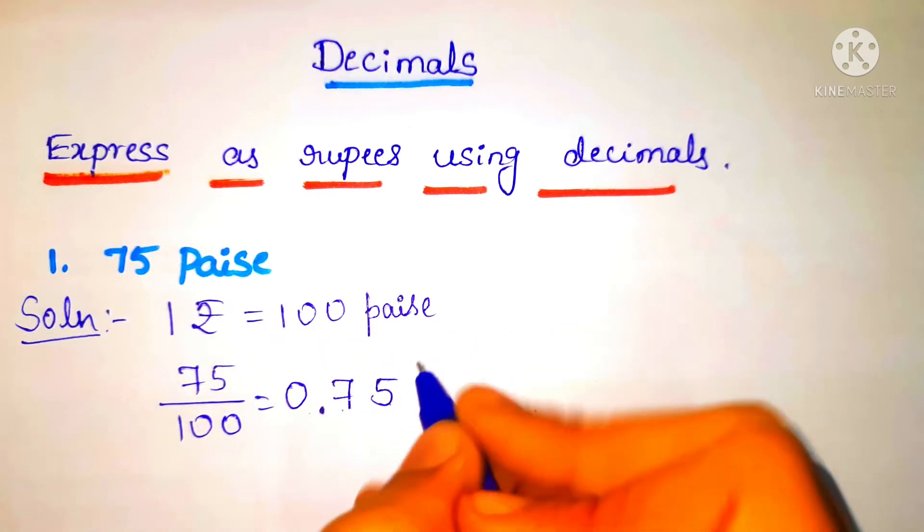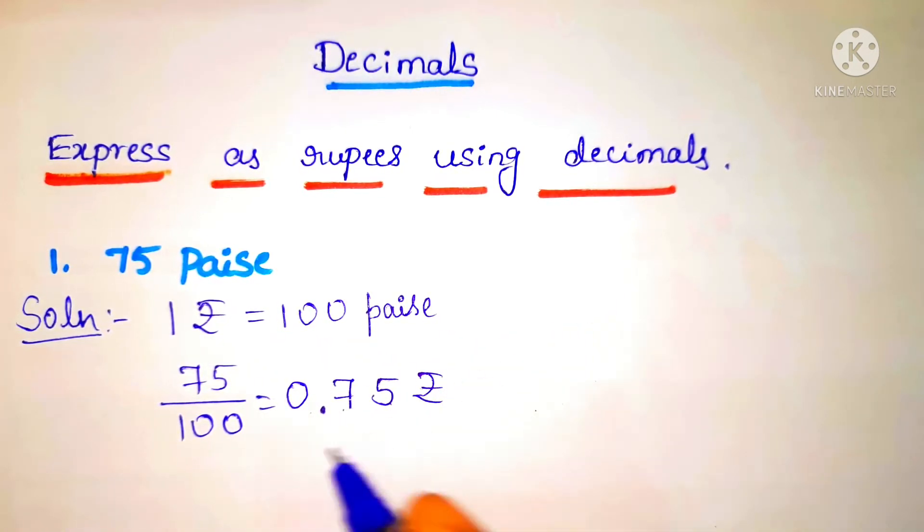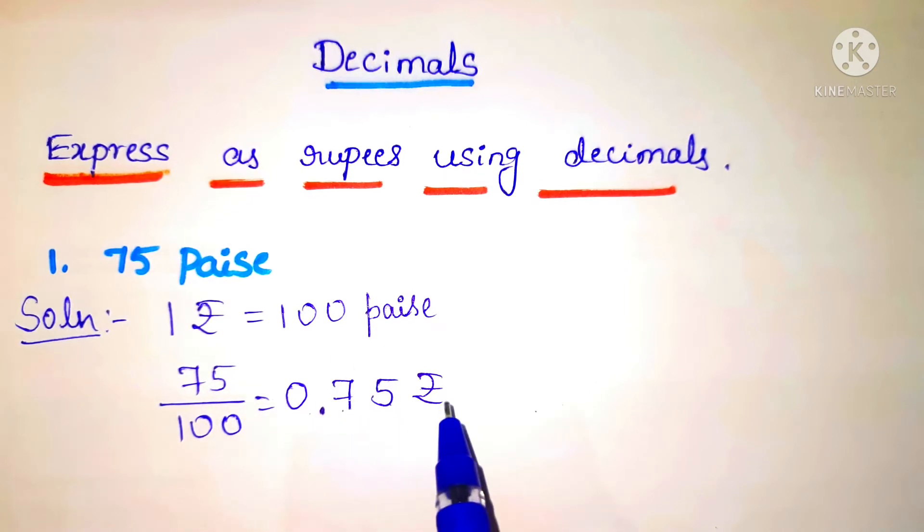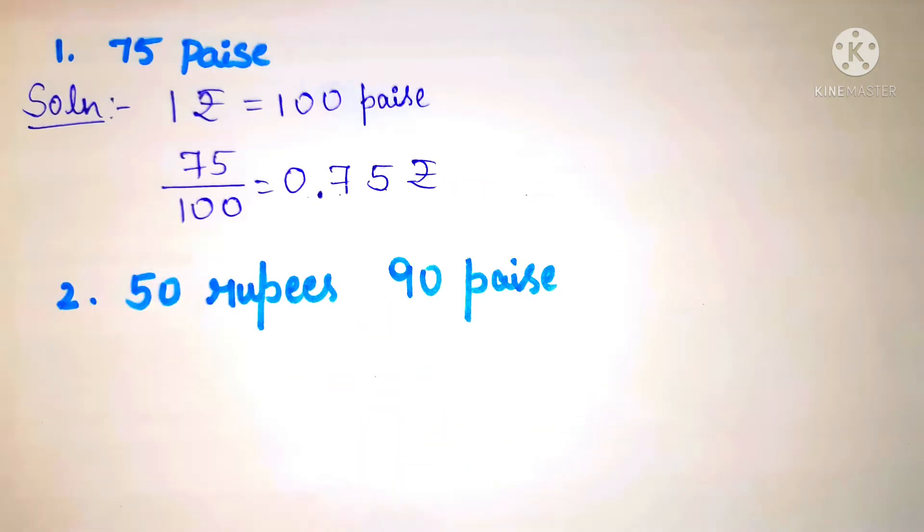So this is converted into rupees: 0.75 rupees. Let's look at another example.